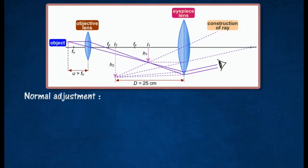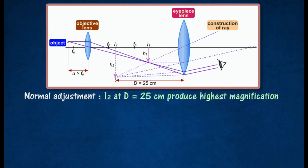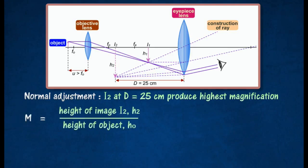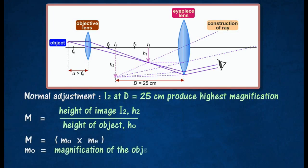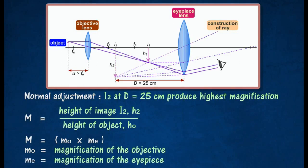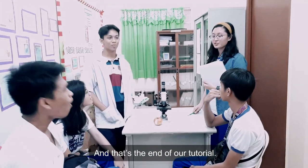In normal adjustment, the final image I2 is formed at the least distance of distinct vision D, equal to 25 cm from the eyepiece, to produce the highest magnification. The magnification M of a compound microscope can be calculated from the following formula, where MO is equal to the magnification of the objective and ME is equal to the magnification of the eyepiece. And that's the end.